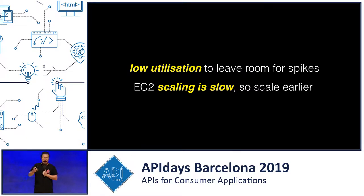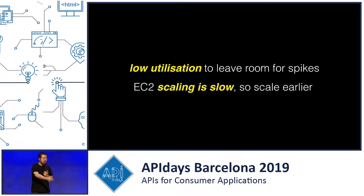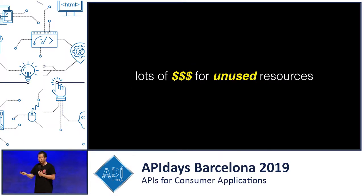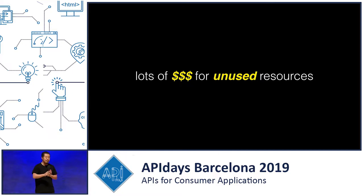That means I have to run my EC2 cluster at a very low utilization — much lower than I would like — and also because EC2 scaling takes time, I need to scale up a lot faster as well. Putting the two things together, we're spending a lot of money on AWS for resources we're just not using. By my estimate, we were probably using about 5% of what we paid for, which means 95% of our AWS bill is just going to waste.